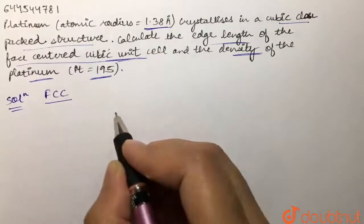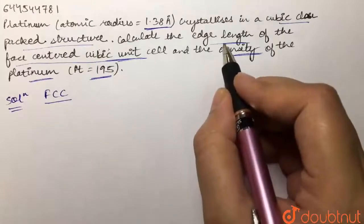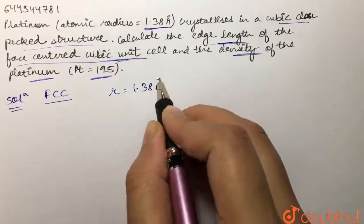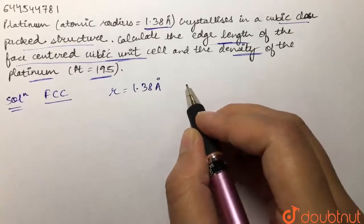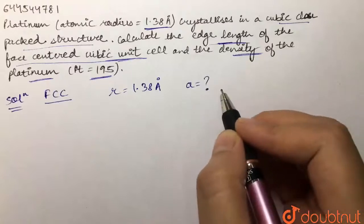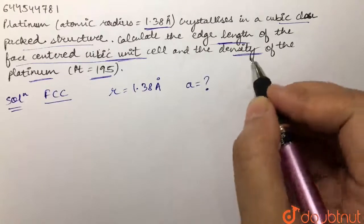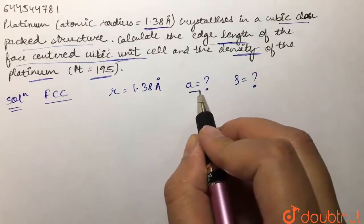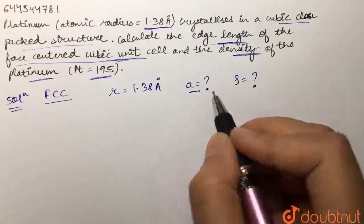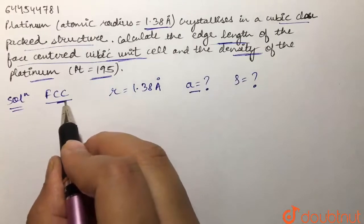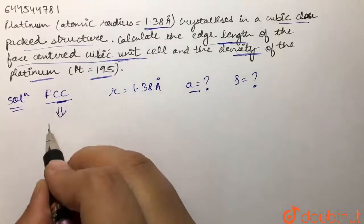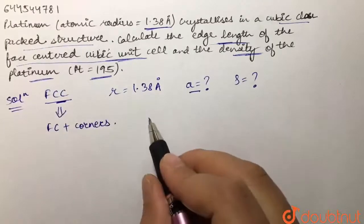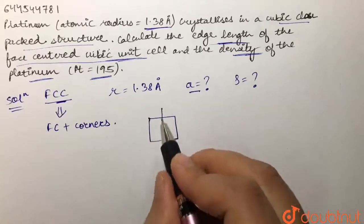The face-centered cubic unit cell arrangement — we need to calculate the edge length. The atomic radius given is 1.38 angstrom, and we need to calculate the edge length 'a' of the unit cell, as well as the density of platinum. In an FCC arrangement, atoms are present at face centers plus at corners.